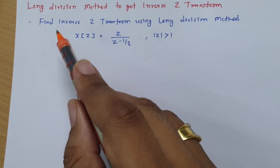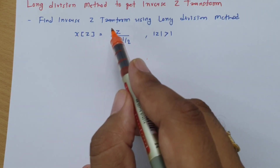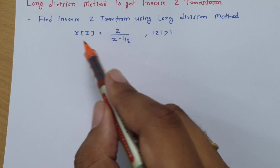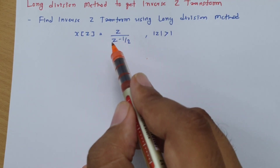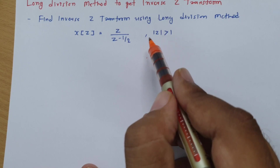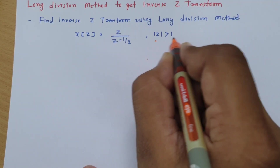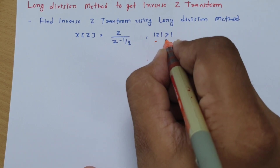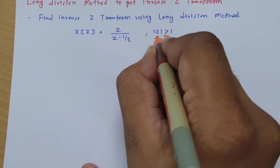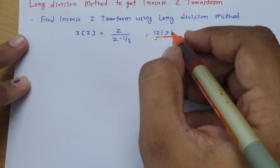We have a question: find the inverse Z transform using the long division method, where X(Z) is given by Z divided by Z minus one-half, and the important condition given is that the modulus of Z should be greater than 1. Modulus of Z greater than 1 means the given system is a causal system.